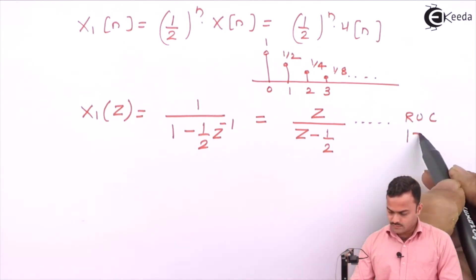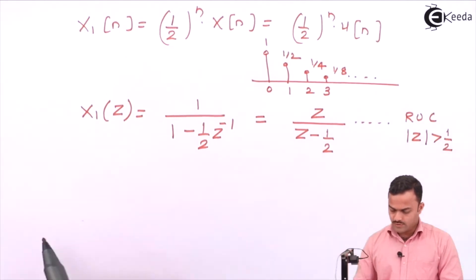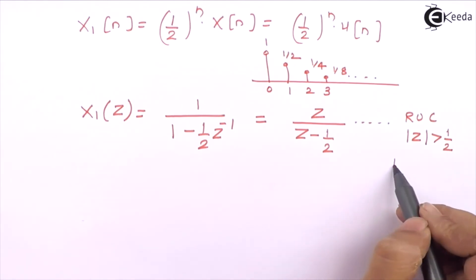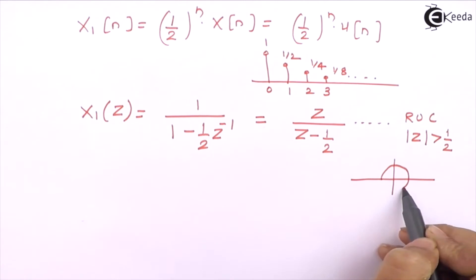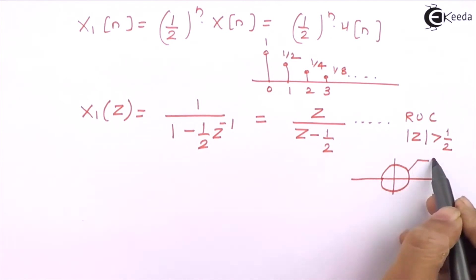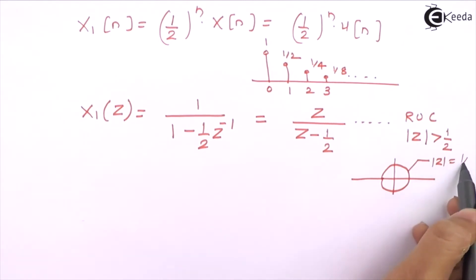ROC is mod Z greater than 1 by 2. If I show a graphical representation, this is mod Z equal to 1 by 2 and the ROC will be like this.